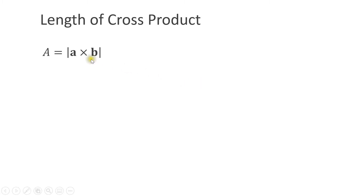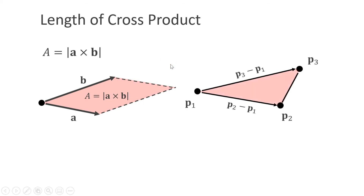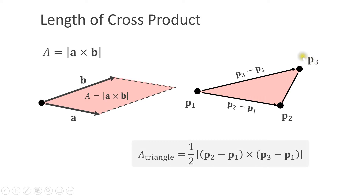We know the cross product of vectors a and b is perpendicular to both — but does the length of this vector have a meaning? The length of the cross product is the area of the parallelogram defined by a and b. We can use this to compute the area of a triangle: compute the vectors from p1 to p2 and p1 to p3, take their cross product and measure its length, which equals two times the area of the triangle.